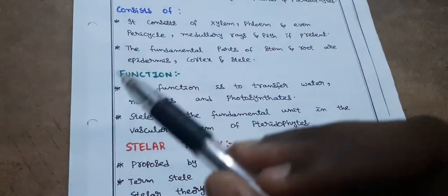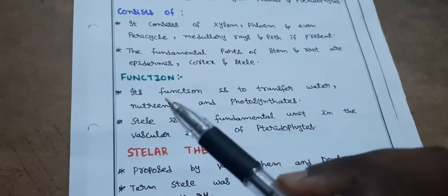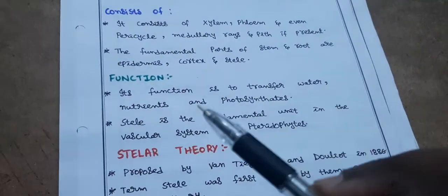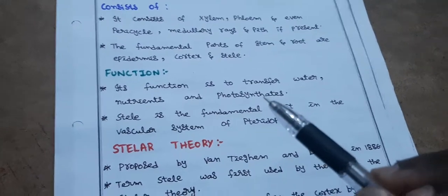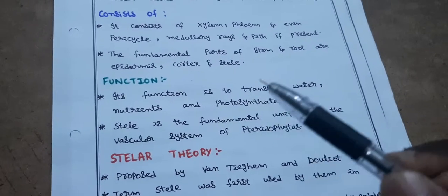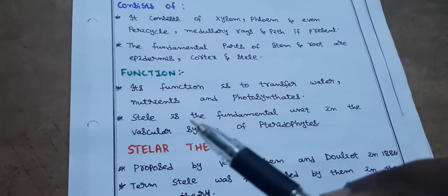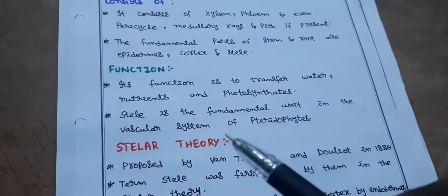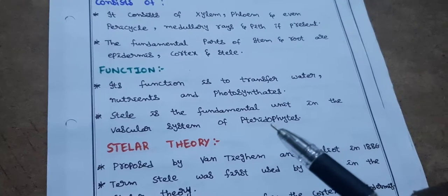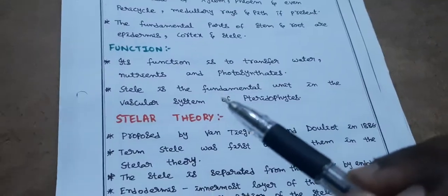The main function of the stele is the transfer of water, nutrients, and photosynthates. Since stele is present both in stem as well as root, it transfers these materials from root to stem and stem to leaf. Stele is the fundamental unit in the vascular system of pteridophytes.